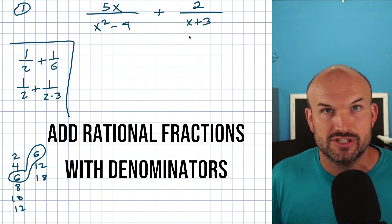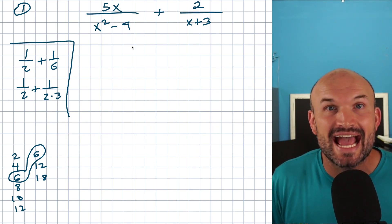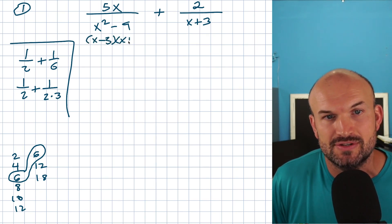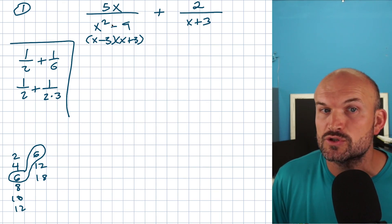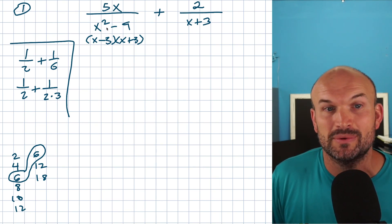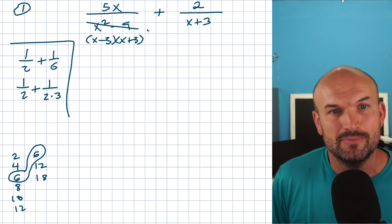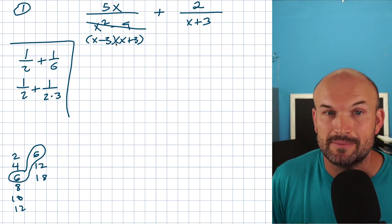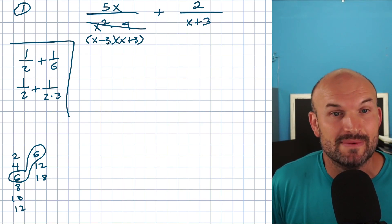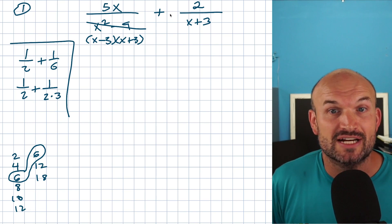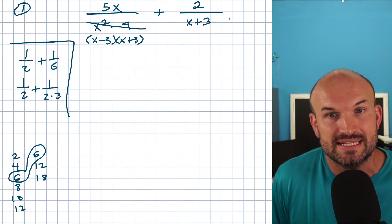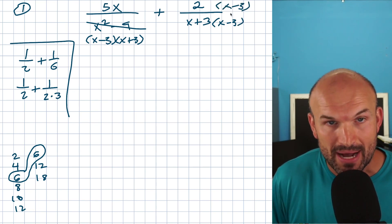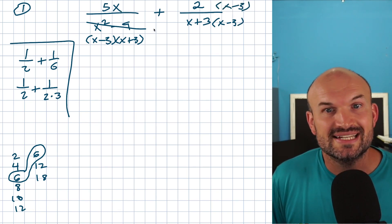I can't do anything with an X plus three. However, with X squared minus nine, I can actually break that down — I can simplify that to X minus three times X plus three, because I recognize that is the difference of two squares. So when you recognize a trinomial that can be factored, factor it. So if I want to add the fraction five X over X minus three times X plus three to two over X plus three, the only thing I need to do to get common denominators is multiply the right-hand fraction by X minus three on the top and bottom, giving me two fractions with the exact same denominators.